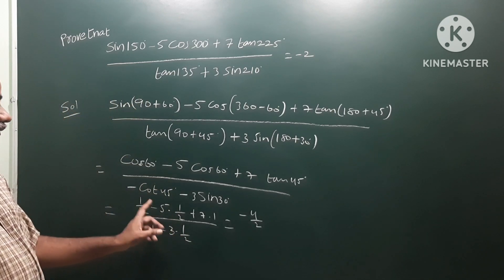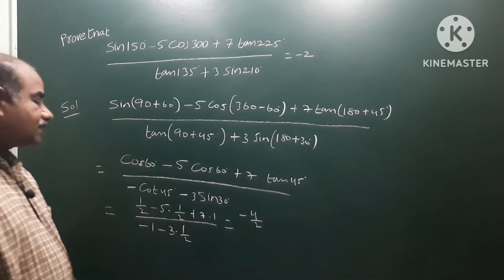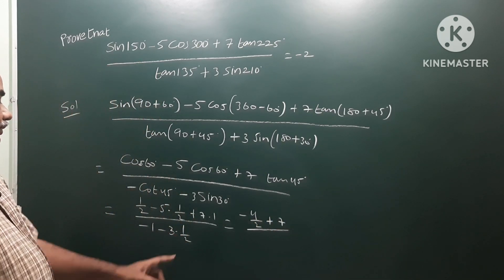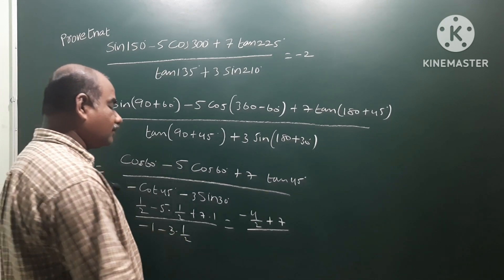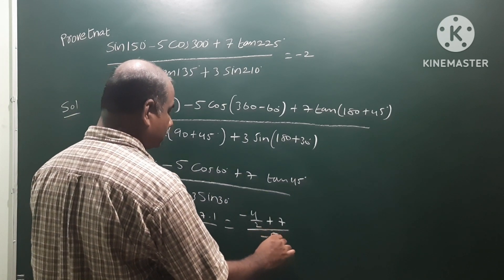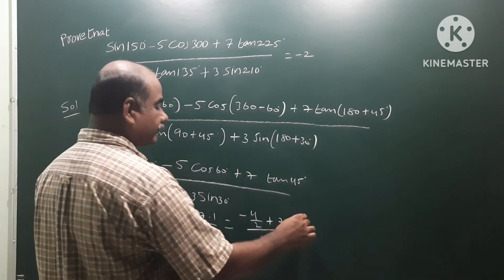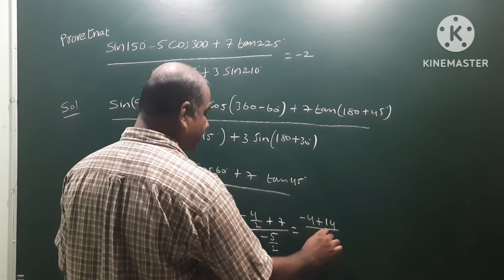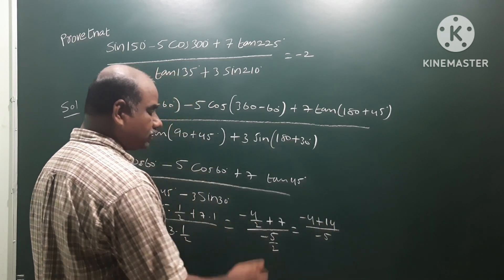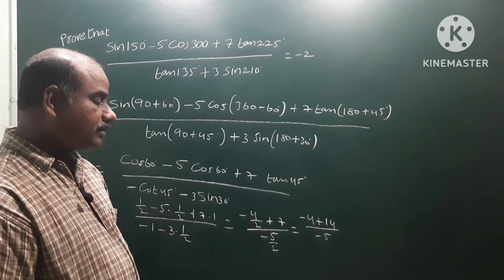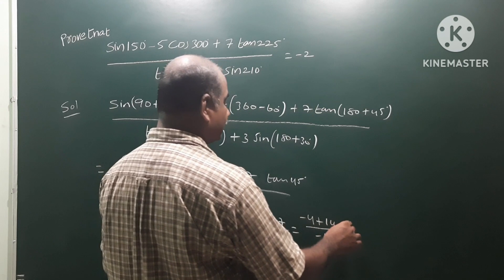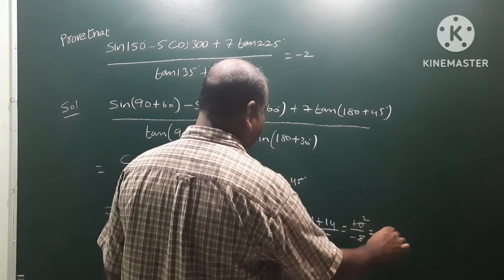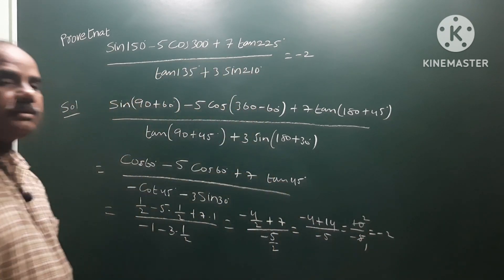Combining: numerator is minus 4 plus 7 by 2, denominator is minus 1 minus 3/2. Taking LCM, numerator becomes 14 minus 4 = 10/2, denominator becomes minus 5/2. So 10/2 divided by minus 5/2 equals minus 2, which is the answer.